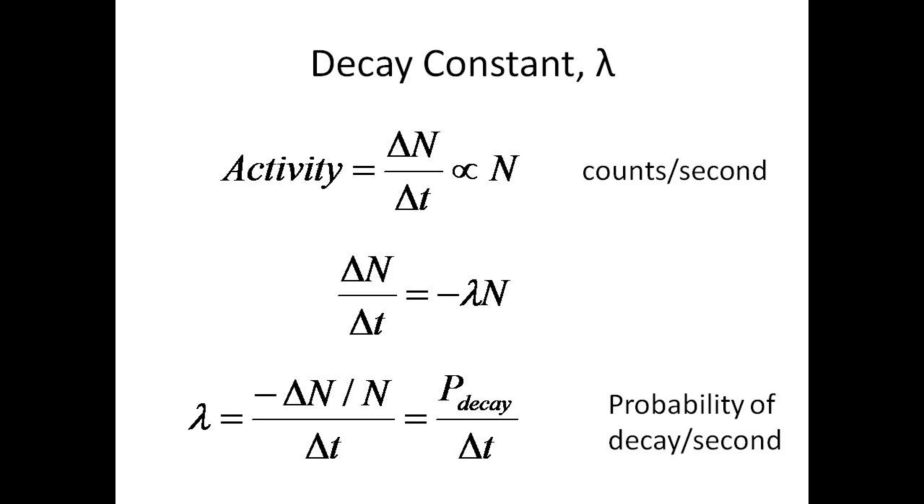The activity is what we will actually measure using a Geiger counter. Activity is defined as the rate of decay, delta N over delta t, in counts per second. Now it so happens that the rate of decay is proportional to the number of radioactive nuclei present in the sample, with the constant of proportionality being the decay constant, lambda.